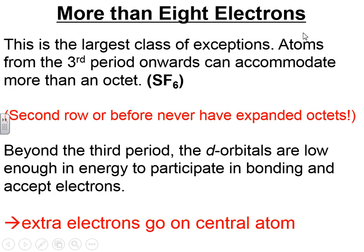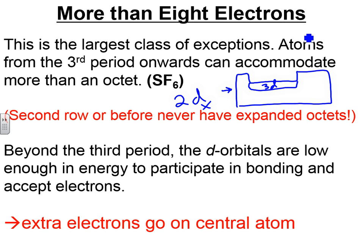All right, more than 8 electrons. This is the largest class of exceptions. And, here, it says, 3rd period onwards, you can accommodate more than an octet. What this means is, if you have the periodic table, elements in the 3rd period actually have d electrons available. So, this is 3d. And, in other words, they have orbitals available for bonding. But, you don't have that in the second energy level because there is no such thing as a 2d subshell. So, second row elements and before cannot do this. Obviously, there's no such thing as the 1d subshell. That does not exist either. But, the 3d subshell exists. So, beyond the third period, d orbitals can be used to participate in bonding. And, the extra electrons will go on the central atom, as you'll see.